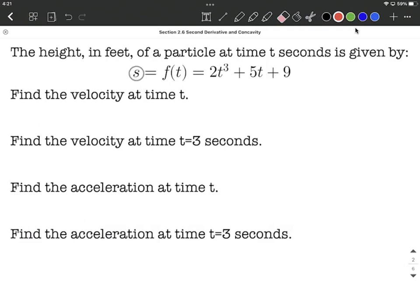This is our position function, a lot of times denoted by s. We're first of all asked to find the velocity at time t. To find the velocity function, sometimes referred to as v of t, is the derivative of the position function.